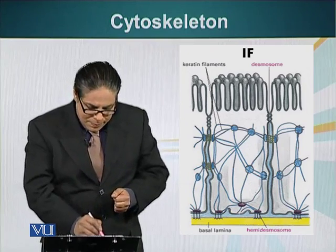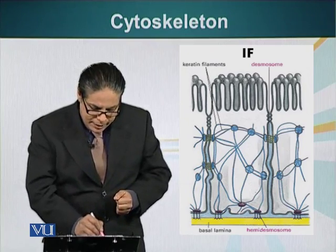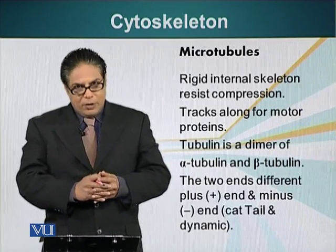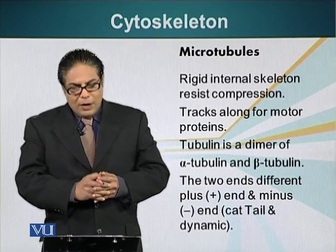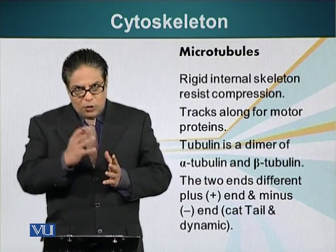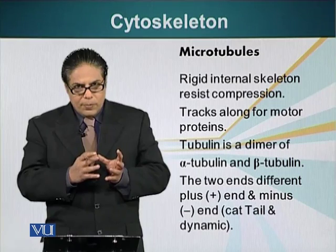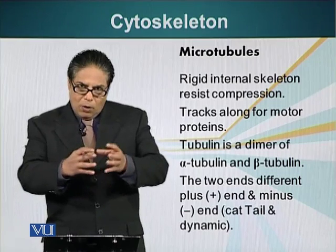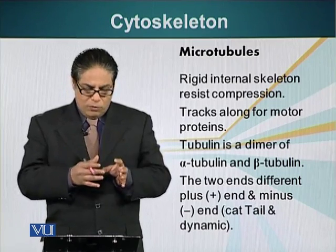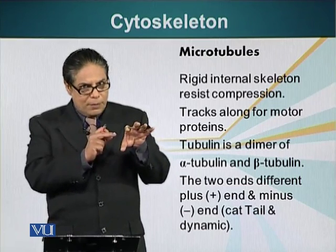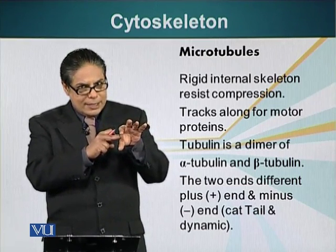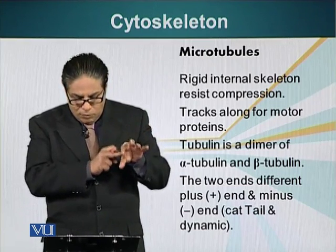Now let us look at the other type of cytoskeletal element: the microtubules. Microtubules are rigid structures — as we saw in the animation, they are hollow, like hollow pipes — and they resist compression forces. What is a compression force? If I press on my skin, that is a compression force.